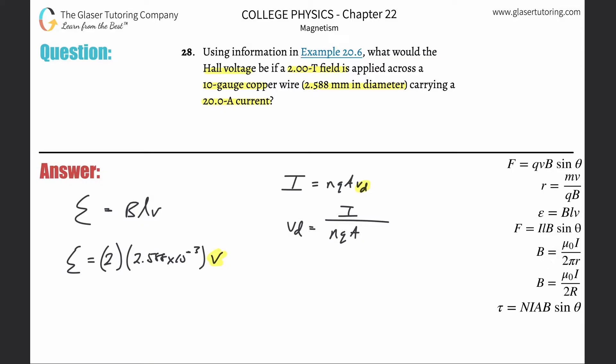Current they gave to us is 20, that's simple. The charge is simple, that's just the charge of an electron, 1.6 times 10 to the minus 19th, because that's what flows in current.